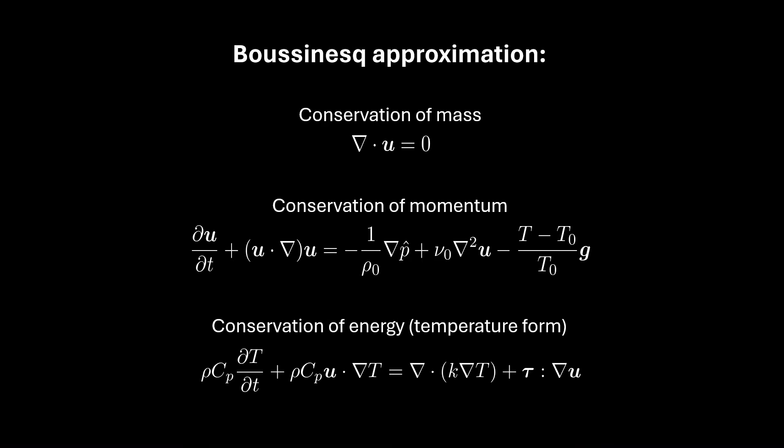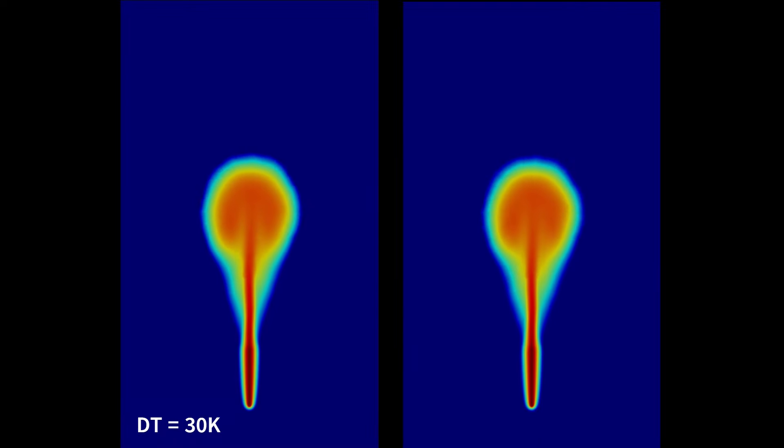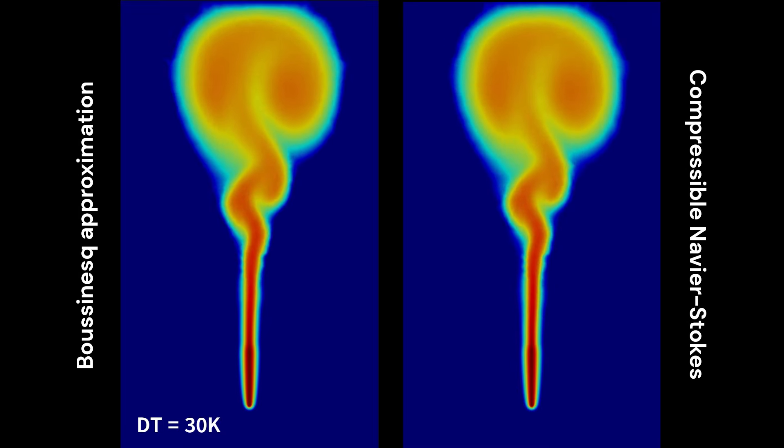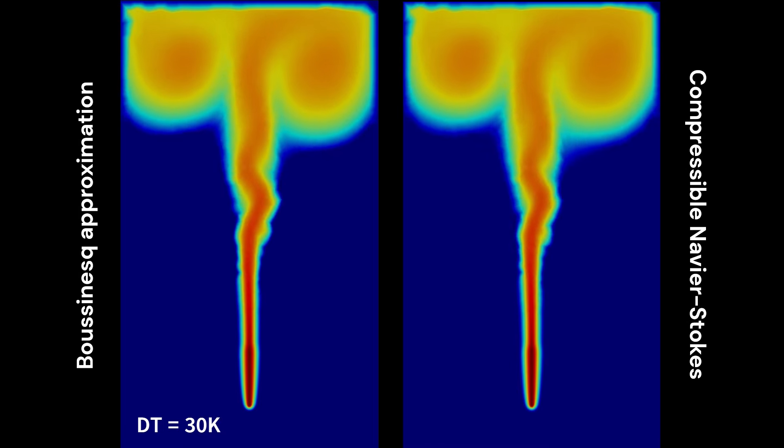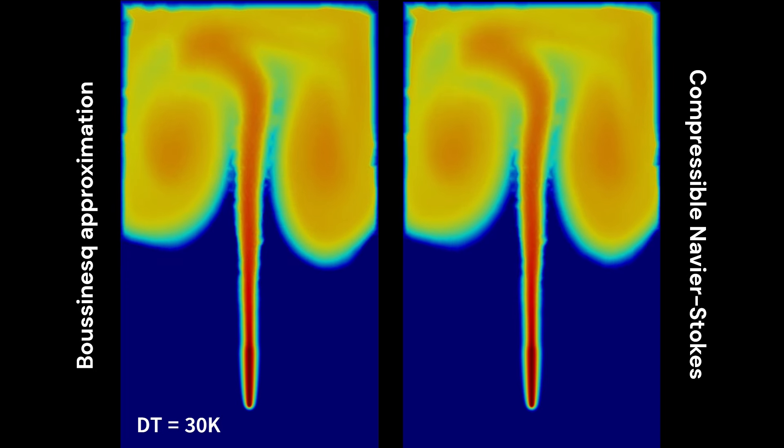This Boussinesq approximation is valid for small temperature variations. If that assumption holds, we indeed observe almost no difference between a simulation based on the Boussinesq approximation and a well-resolved simulation of the compressible Navier-Stokes equations.